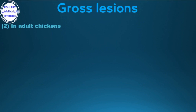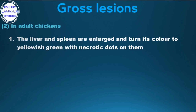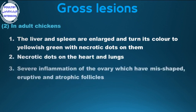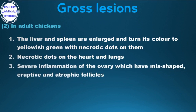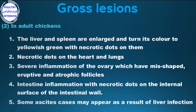In adult chickens: The liver and spleen are enlarged and turn yellowish-green with necrotic dots on them. 2. Necrotic dots on the heart and lungs. 3. Severe inflammation of the ovary with misshapen, eruptive, and atrophic follicles. 4. Intestinal inflammation with necrotic dots on the internal surface of the intestinal wall. 5. Some ascites cases may appear as a result of liver infection.